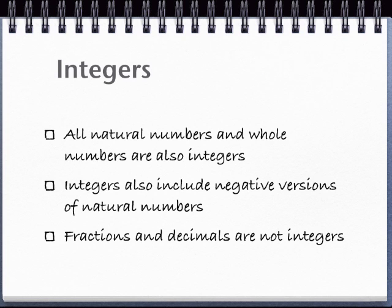Now for integers. The set of integers includes all whole numbers. It also includes the negative versions of whole numbers. So if you start counting at zero and count up, you're counting whole numbers. Now if you count down and go past zero into negative numbers, you're counting integers.